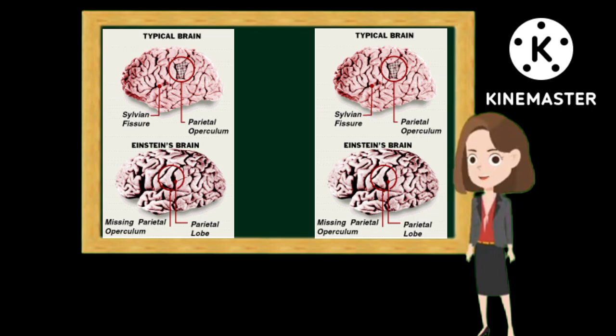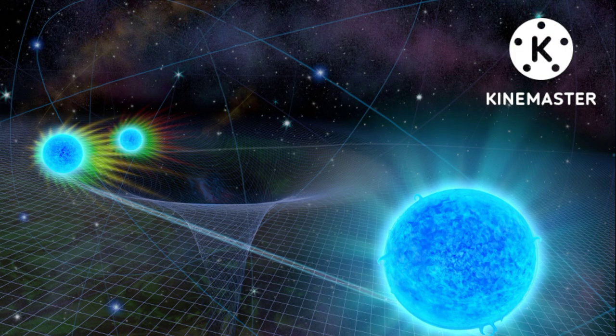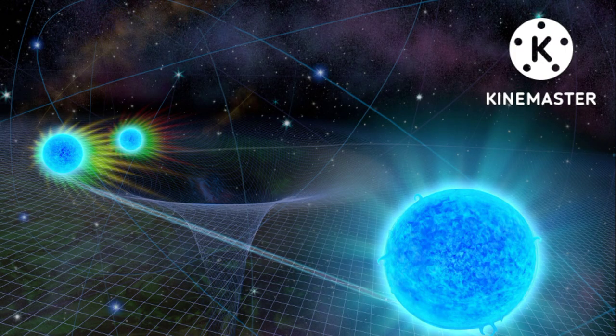There were, in fact, unique features to Einstein's brain that may be the answer to how he was so smart. Some parts of the brain were thicker than average, which could mean he had a stronger connection between the two hemispheres.